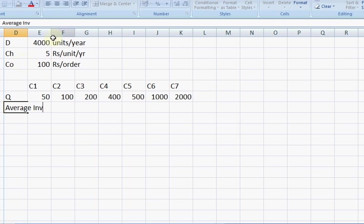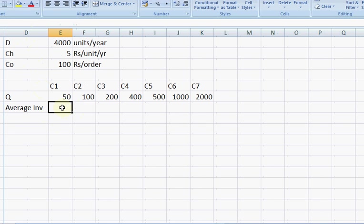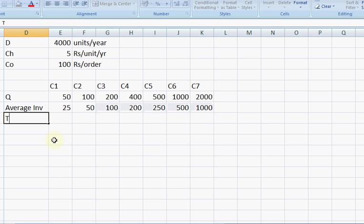Is maximum plus minimum divided by 2, which is in this case we said it's maximum divided by 2, is equal to 50 divided by 2. This is my average inventory in each case. I will copy this formula.